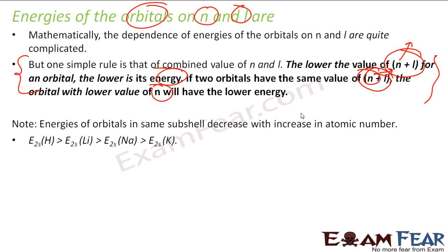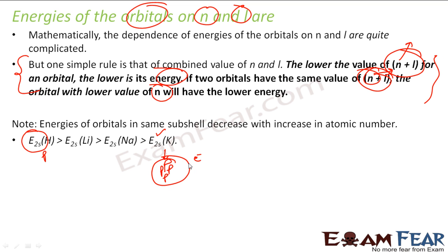The energy of orbitals in the same sub-shell decreases with an increase in the number of electrons and protons. For example, potassium has more protons, so it holds the electron more tightly and the electron energy is less. Hydrogen has only one proton, so it holds the electron less tightly, and the electron has higher energy. More protons means more tightly held electron and thus lower energy.